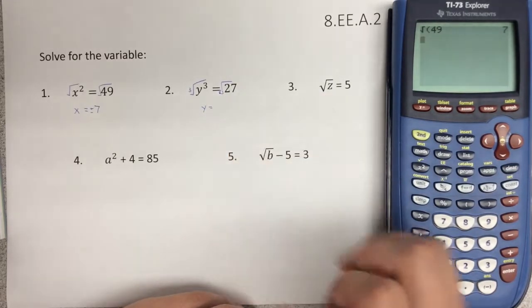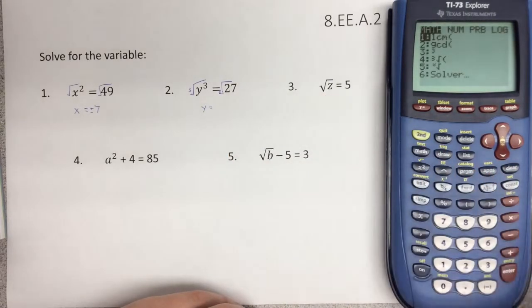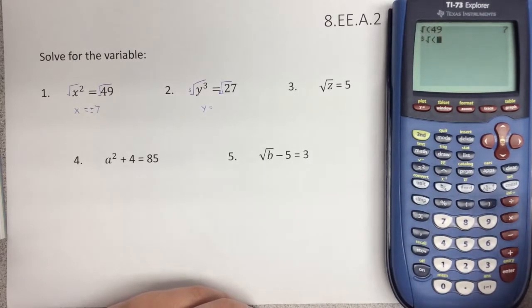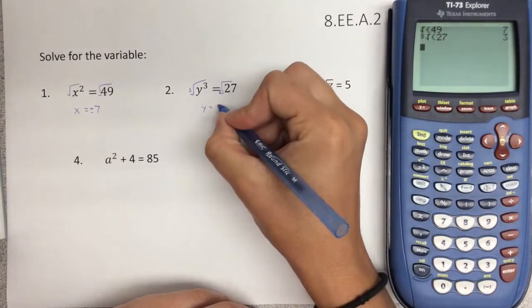And then the cube root of 27, you're going to press math, go down to the fourth option, press enter, and now type in your number. And the cube root of 27 equals 3.